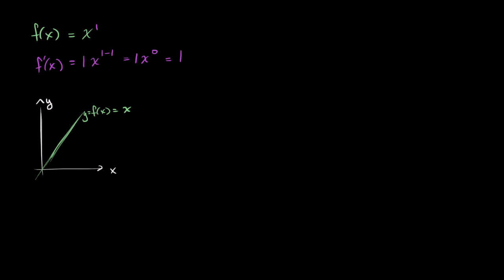Now let me graph the derivative, f prime of x. That's saying it's 1 — it's 1 for all x. Regardless of what x is, it's going to be equal to 1. Is this consistent with what we know about derivatives and slopes? Well, the slope of this line is 1 continuously — a constant slope of 1. Slope is equal to 1 no matter what x is. It's a line, and for a line the slope is constant. So we got a pretty valid response there.